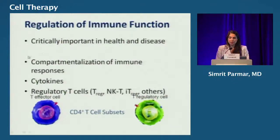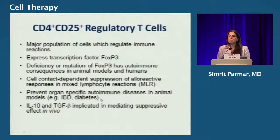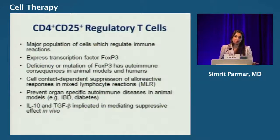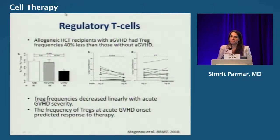Regulation of immune function is very important. There is a compartmentalization within the CD4 T cell subset: an effector T cell that attacks when there is antigen mismatch, and the regulatory T cell which leads to suppression. In patients who have deficiency of regulatory T cells there are immune dysfunctions, and mouse models have shown that if you knock out regulatory T cells completely, they develop very severe immune deficiency and ultimately die.